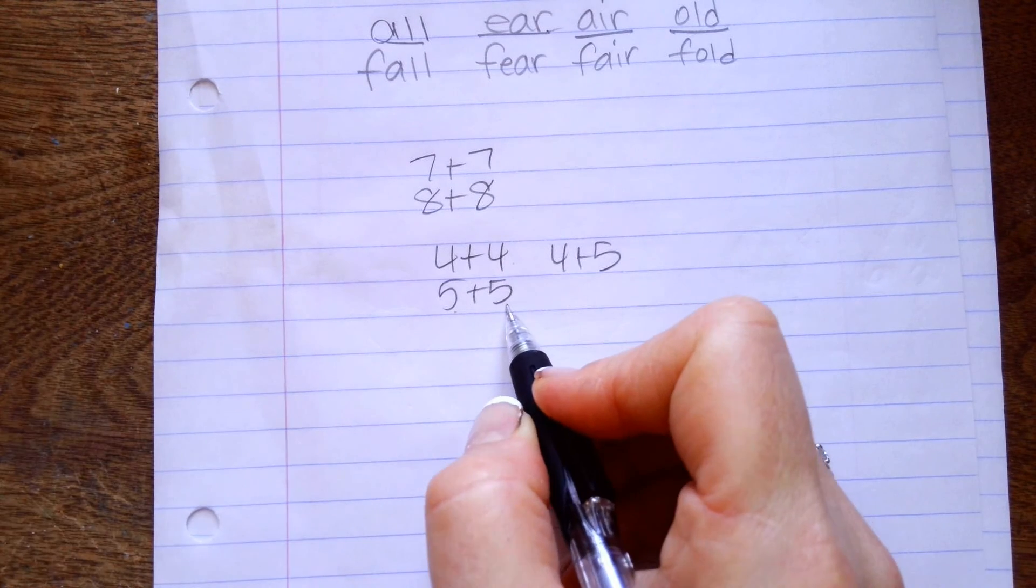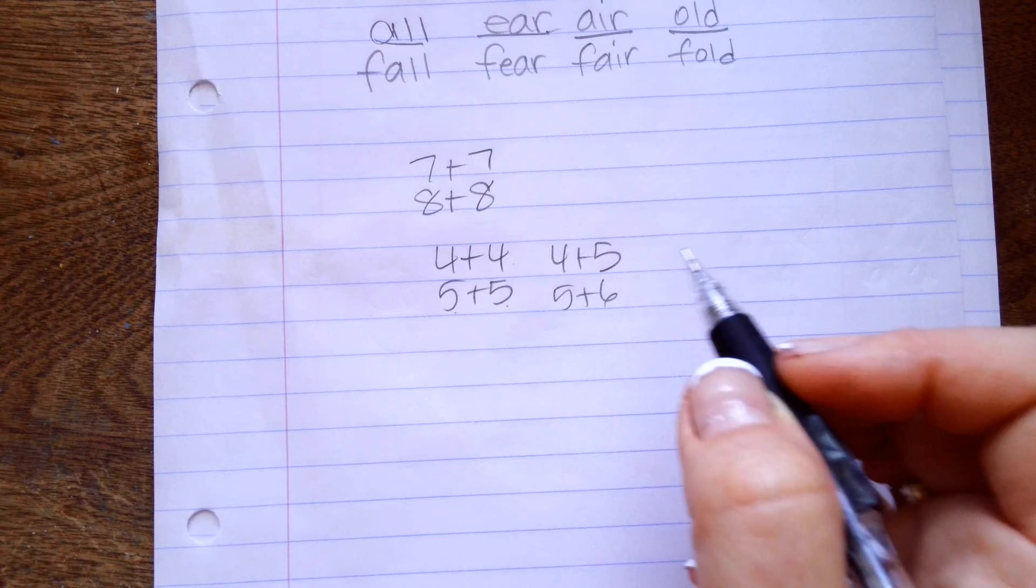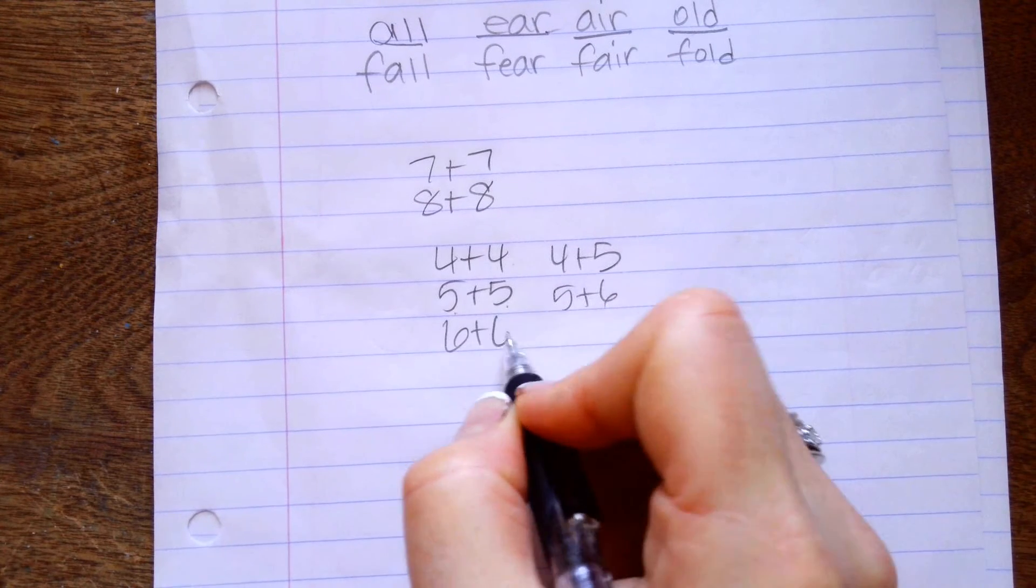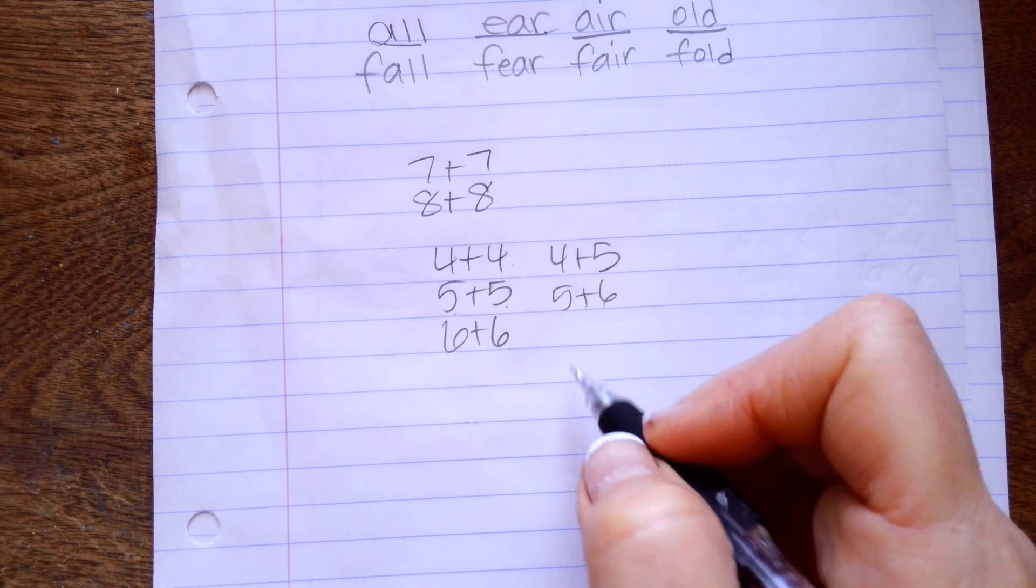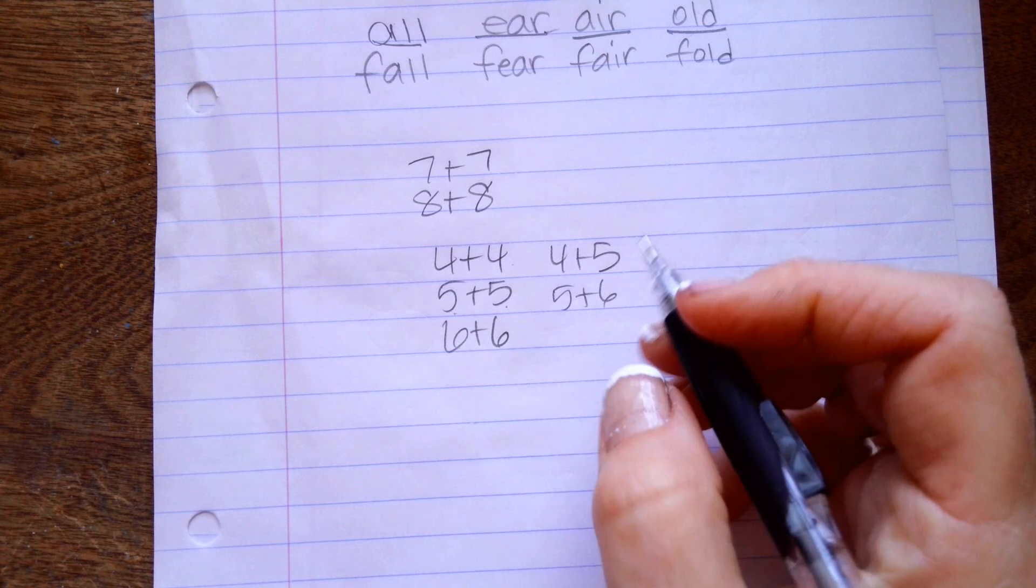5 plus 5 is 10. So 5 plus 6 is 11. So that was kind of like weird about 7 plus 7 and 8 plus 8. Tell me.